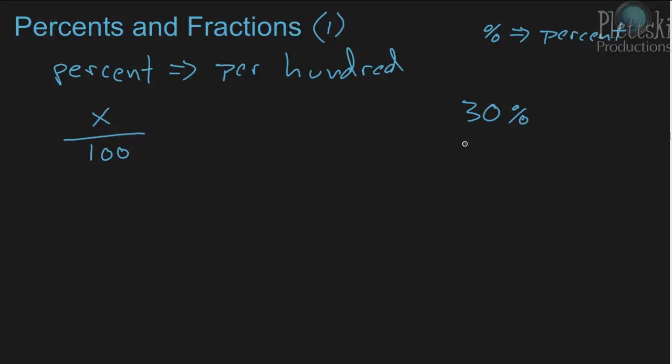Thirty percent is the same thing as thirty per hundred, and thirty per hundred can be written as thirty over one hundred.